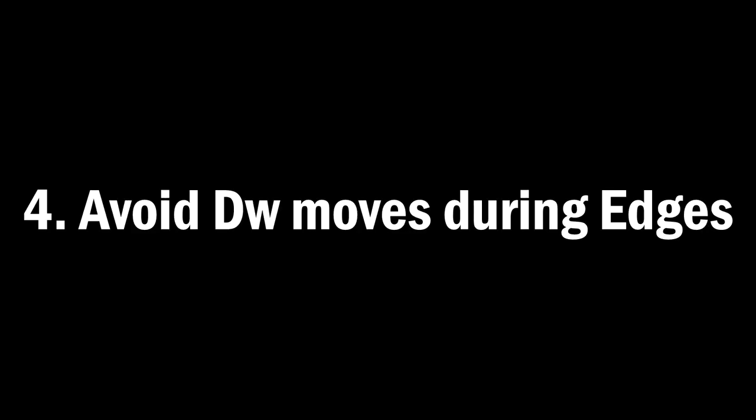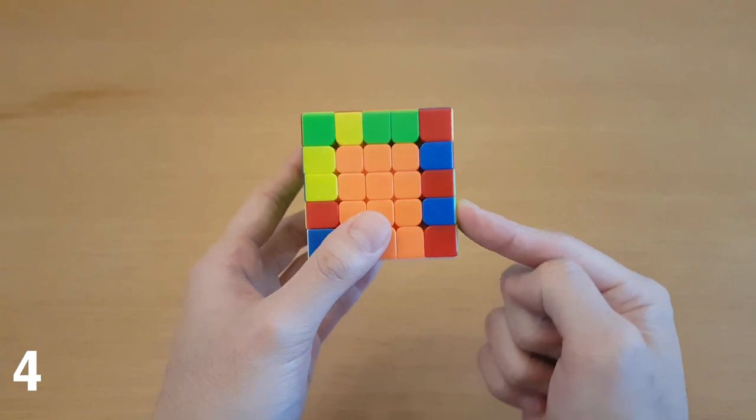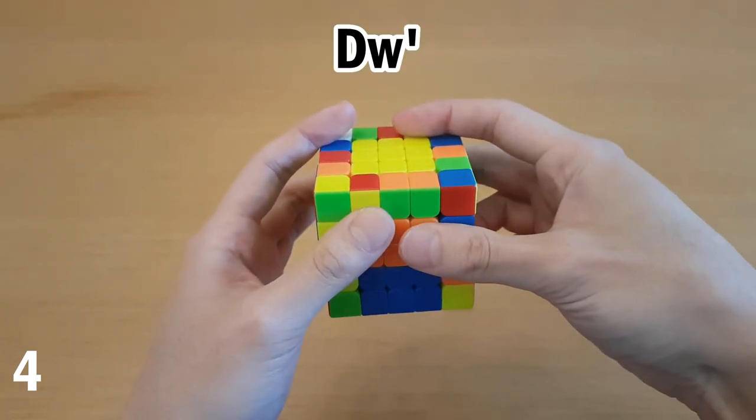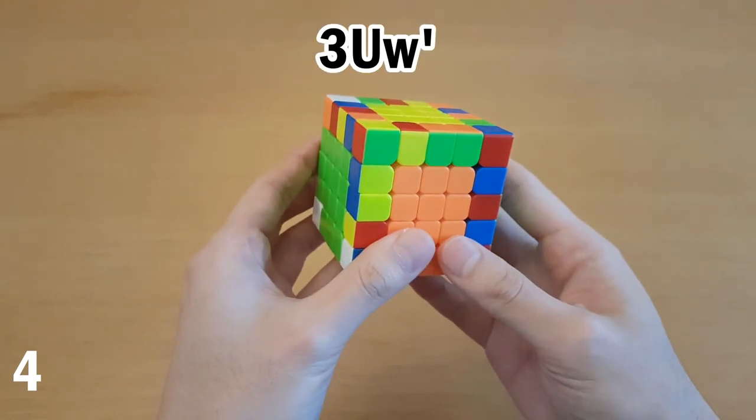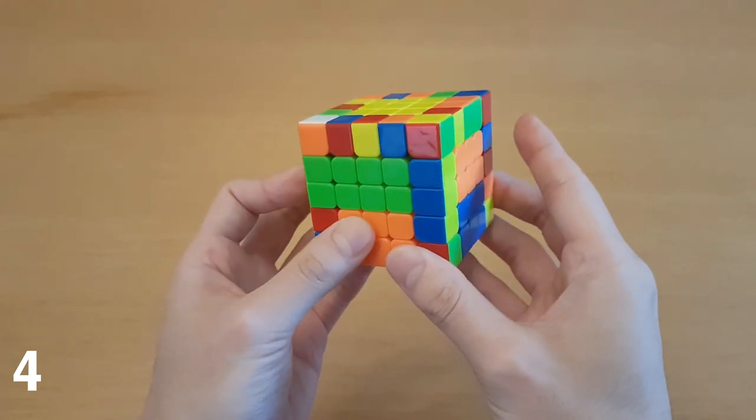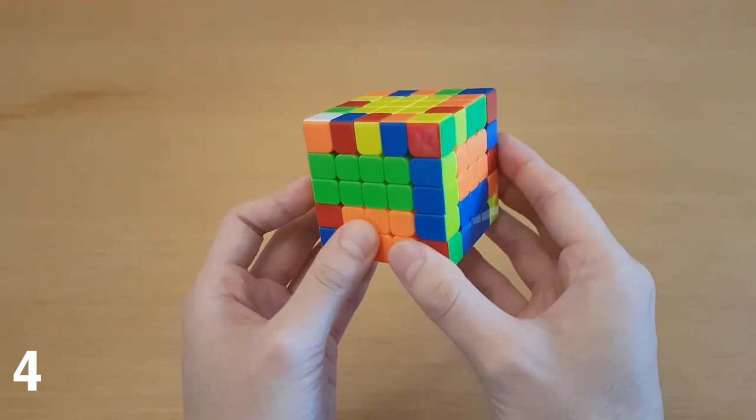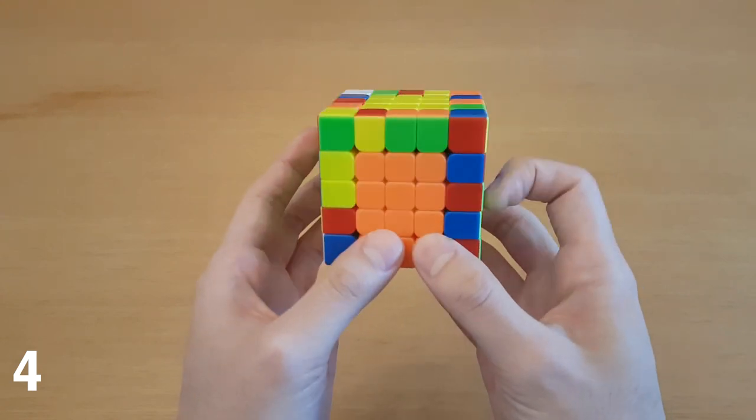Number four, avoid D moves during edges. To pair up this and this, the best way is not with D prime because my hands move like that. Instead, the best way to do it is wide U prime. I recommend practicing this to get used to doing it as much as possible, but make sure you know the limits of when you can't do this.